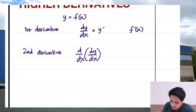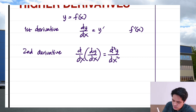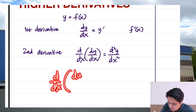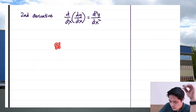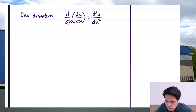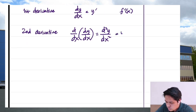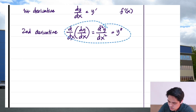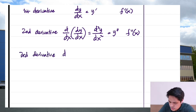The second derivative can be written as d/dx of y prime, or rewritten as d²y/dx². Don't worry about this — you are not squaring dx, because this is not multiplication. You are simply applying the derivative to the derivative, just like sine of theta is not multiplying sine with theta, you are applying sine to theta. So that's not multiplication. We could also shorten it to y double prime or f double prime of x.